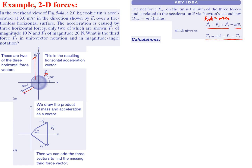Now to solve this, like we did in kinematics, we need to break it into an X component and a Y component. So we'll say that our F3 in the X direction is equal to mass times acceleration in the X direction, minus F1 in the X direction, minus F2 in the X direction. We basically just took this equation and made everything just in the X direction.